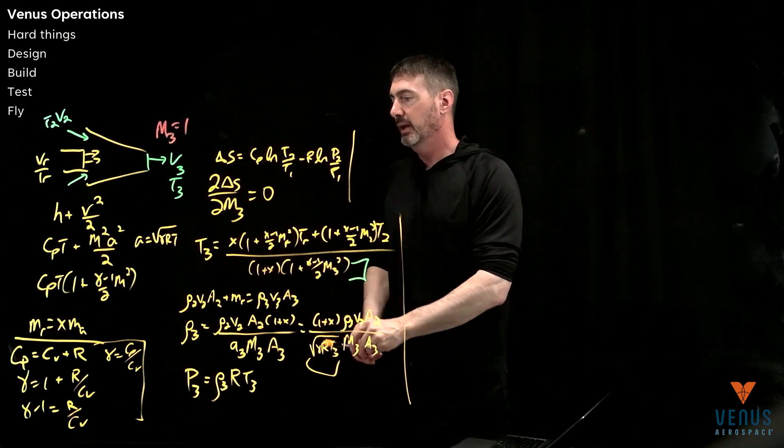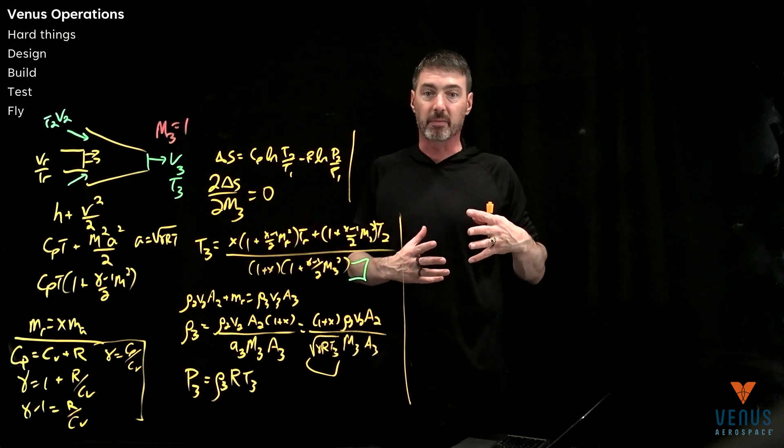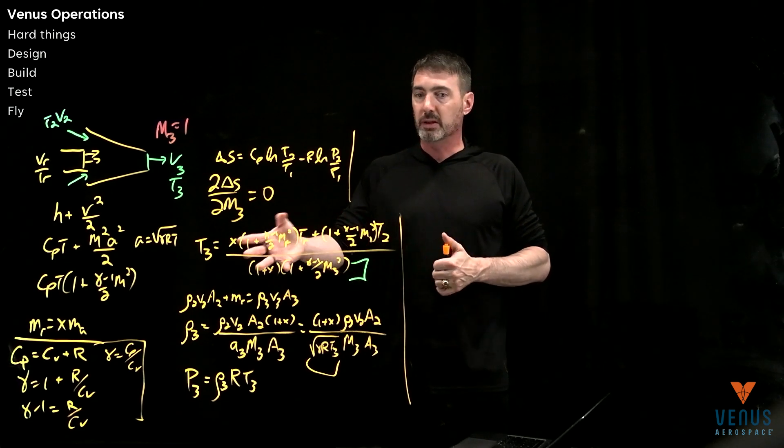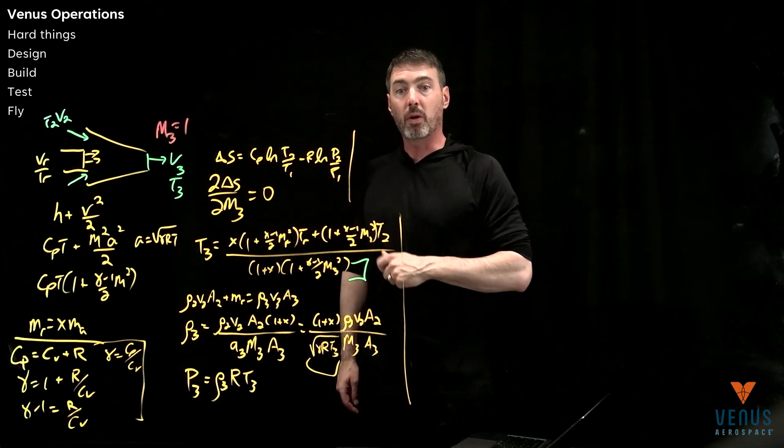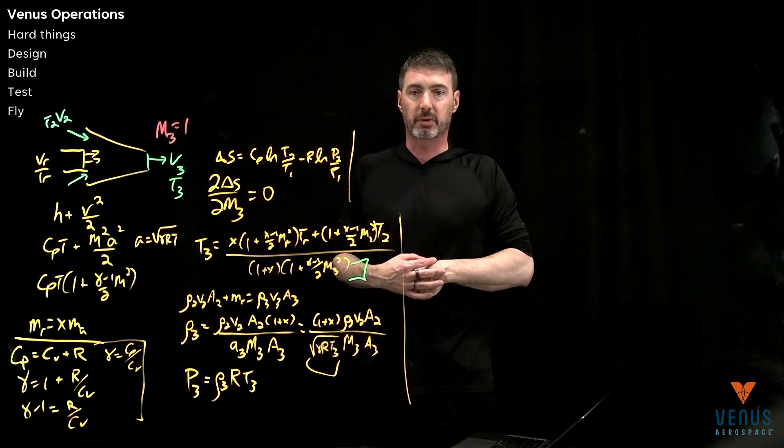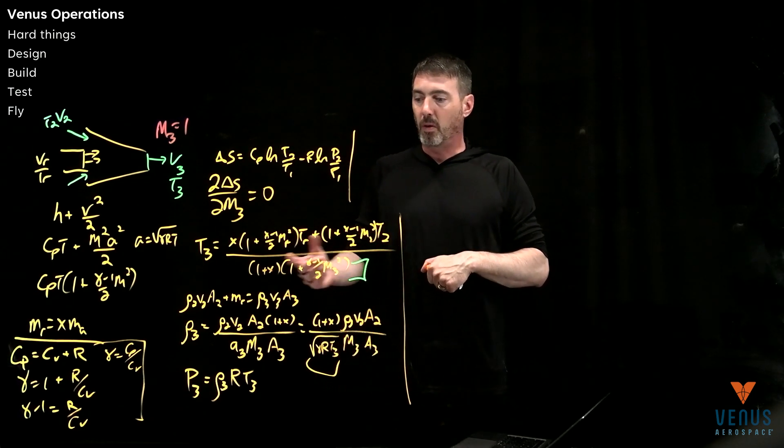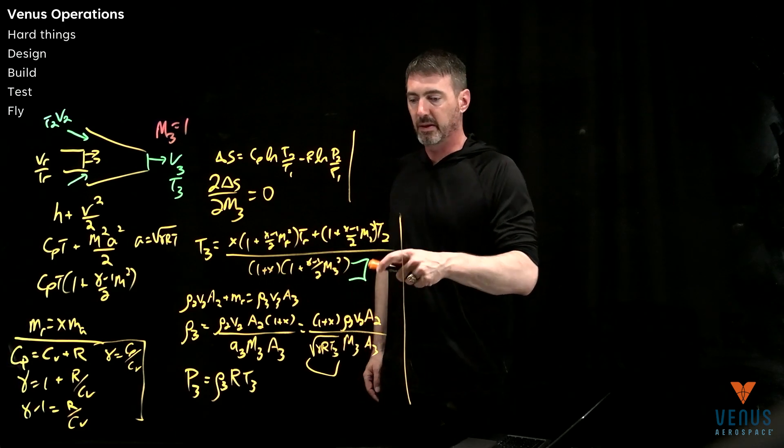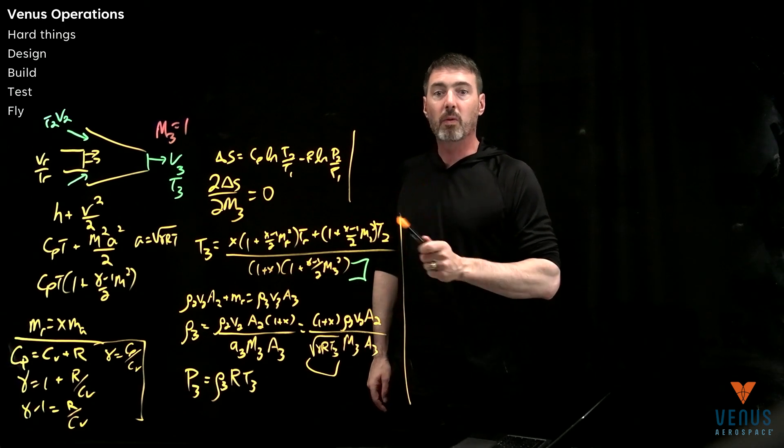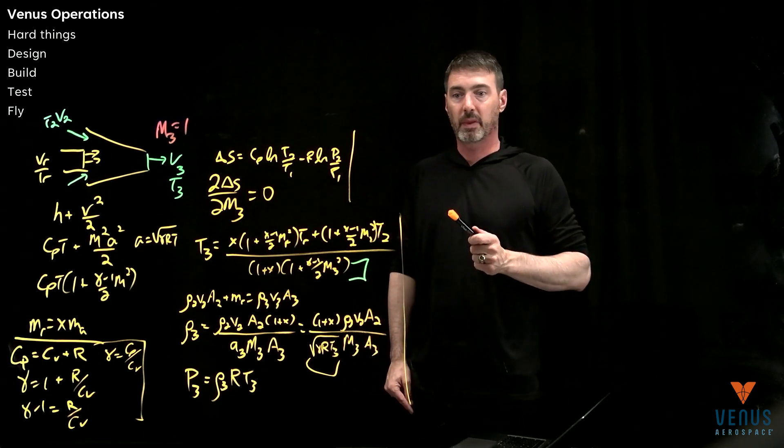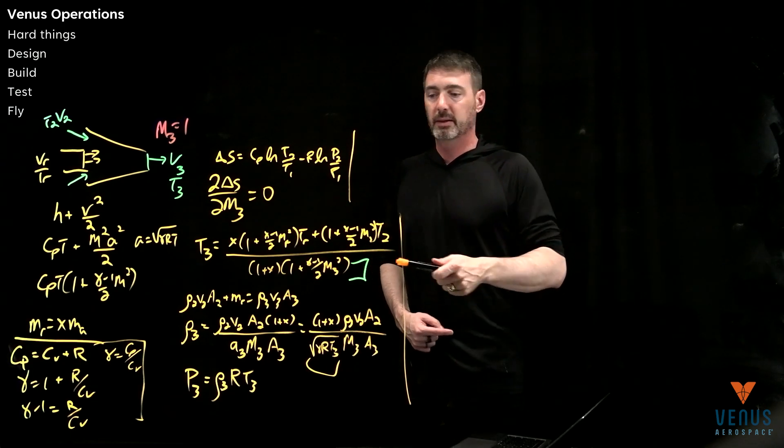Now remember, x was just how I said that the mass of the rocket is some fraction x times the mass flow rate of the air being inducted. And so the conservation of energy term, there we have a rocket portion, so x times 1 plus gamma minus 1 over 2, the Mach of the rocket squared, times temperature of the rocket, and then 1 plus gamma minus 1 over 2 Mach 2 squared times T2, and then all of that divided by 1 plus x, and then as well as there's this term. I highlighted this in green. That's the only portion of this term that's a function of Mach 3, right?